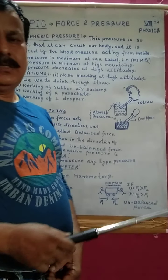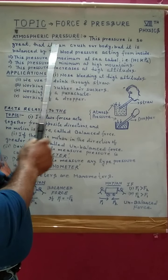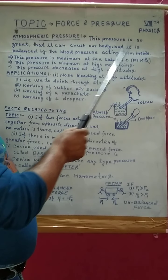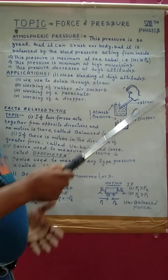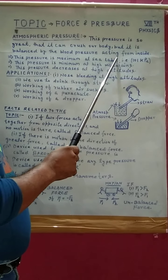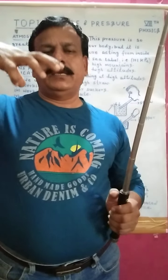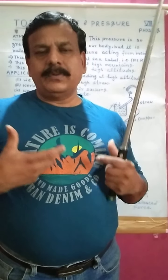We have already discussed what atmospheric pressure is. This pressure is so great that it can crush our body. But it is balanced by the blood pressure acting from inside — our internal blood pressure cancels this outer pressure. That is why we are safe.